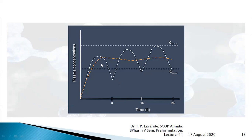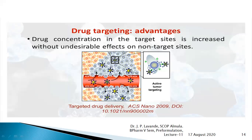Frequent dosing leads to non-compliance. If by mistake the patient misses the second dose, the concentration will fall. When another dose is given, it may only reach a lower level and not achieve the minimum steady state plasma concentration, making that dose ineffective. So we need to maintain drug concentration between CSS min and CSS max to achieve therapeutic effect.